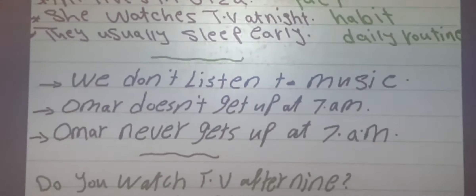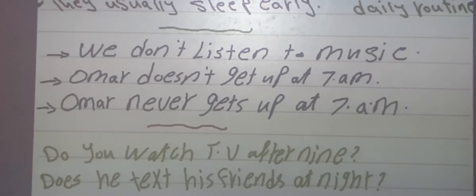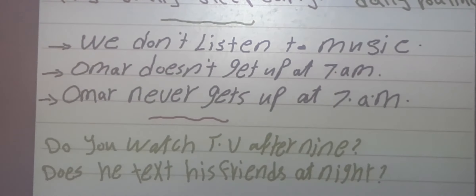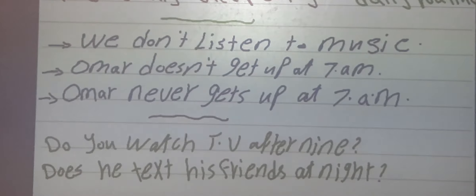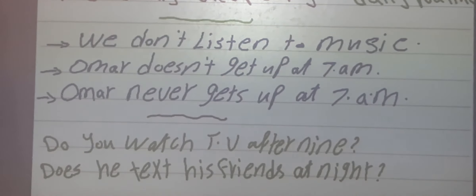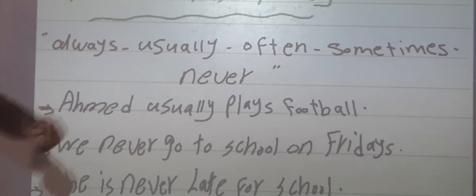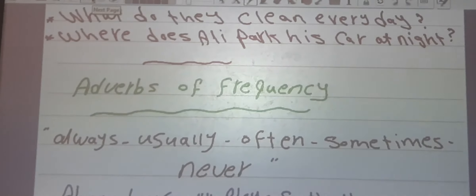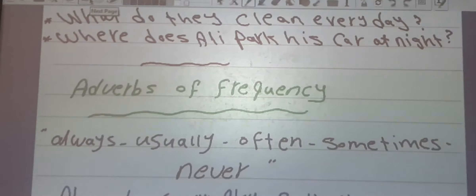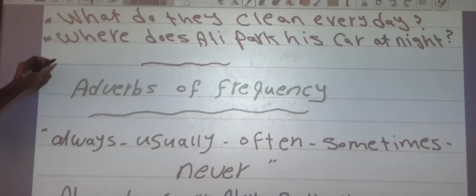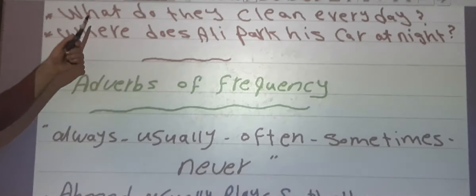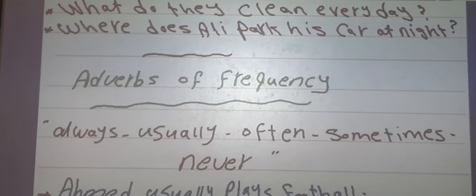If we want to make a yes/no question we use do and does with subject and infinitive verb — for example: Do you watch TV after 9? Does he text his friends at 9? For WH-questions, we use a WH-word plus do or does, plus subject, plus verb infinitive — for example: What do they do every day? Where does Ali live?